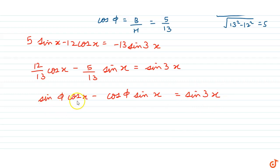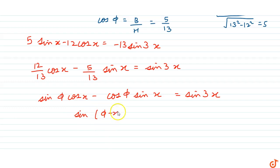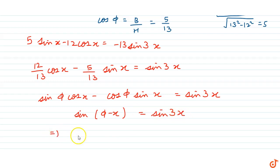We recognize this as the formula sinA·cosB - cosA·sinB = sin(A - B). So the left side equals sin(φ - x), giving us sin(φ - x) = sin3x.